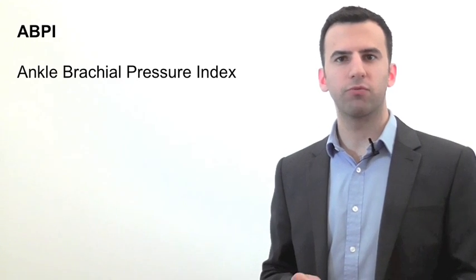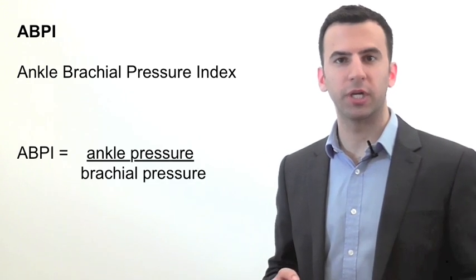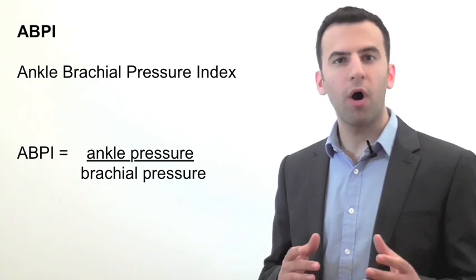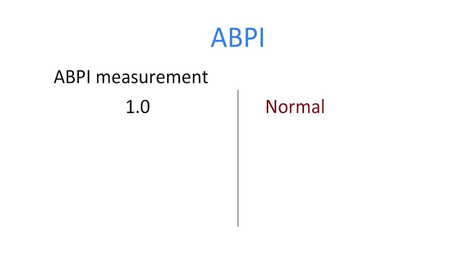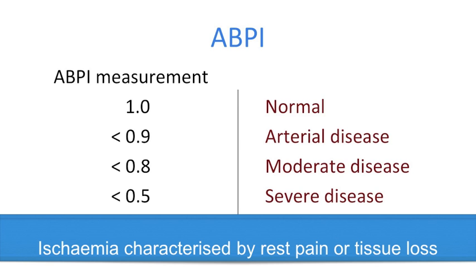The ankle brachial pressure index is a ratio of the blood pressure at the ankle compared to the blood pressure in the arm. You need a handheld Doppler and a blood pressure cuff, and you record the blood pressure at each dorsalis pedis and posterior tibial artery, taking the higher of the two for each ankle, and dividing it by the pressure in either arm. So an ABPI of 1 generally means that arterial flow to the foot is unobstructed, and so the pressure here is equal to the pressure at the arm. Anything less than 0.9 represents lower limb arterial disease. Once it gets below 0.8 it is moderate, and less than 0.5 is severe. And then ischemia can become critical. Now when it comes to critical ischemia, there is more than one definition, but my preferred one is not based on an ABPI measurement, but is defined as ischemia characterised by rest pain and or tissue loss.